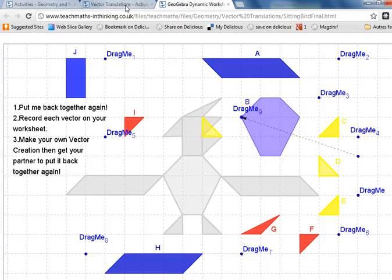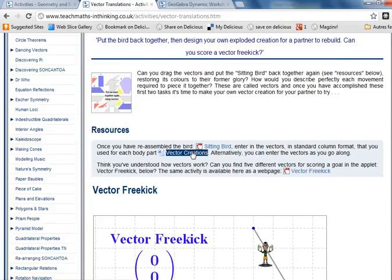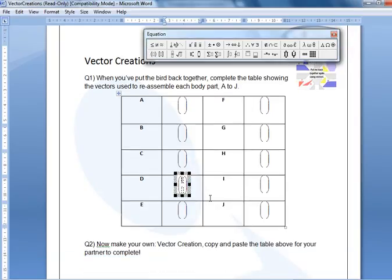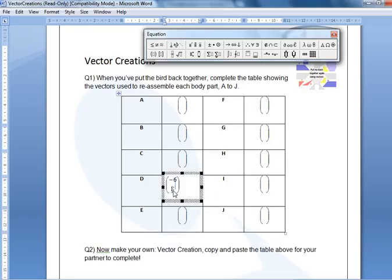The next part of the activity is to have the word document here open or printed out in front of you. You can just write on it if it's printed out. If you're doing this on computer, double click. It's minus six because we're going to the left and it's two up.